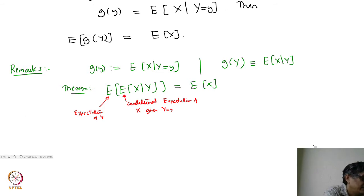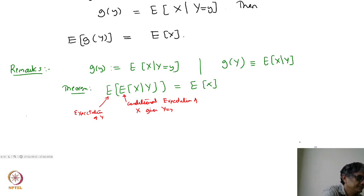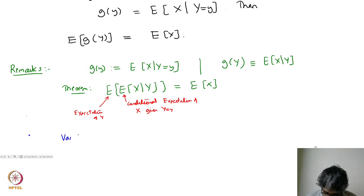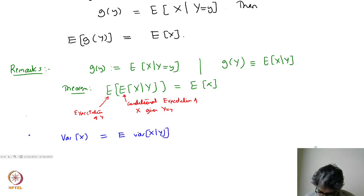There is also an extension to the variance. The claim for the variance also holds. The variance of X is essentially going to be the expected value of variance of X given Y, plus the variance of the expected value of X given Y.